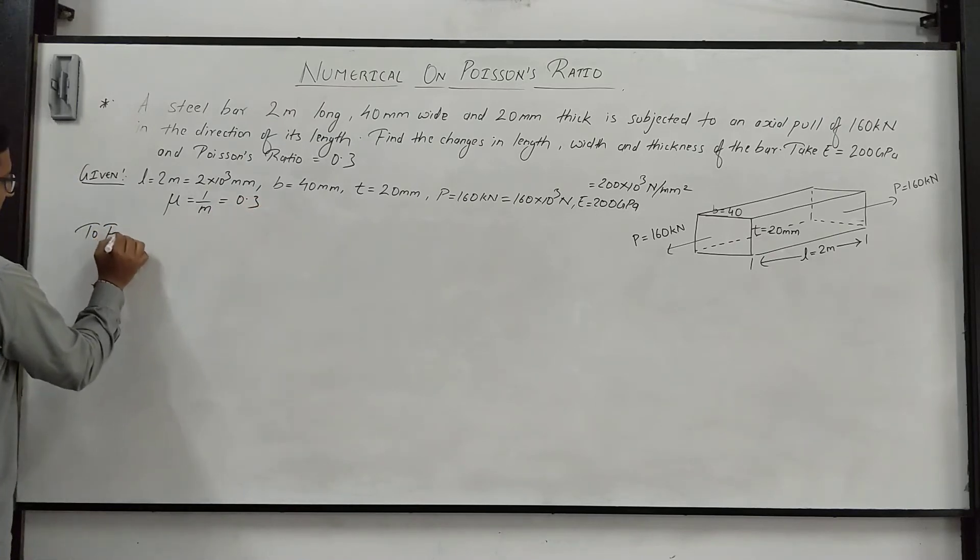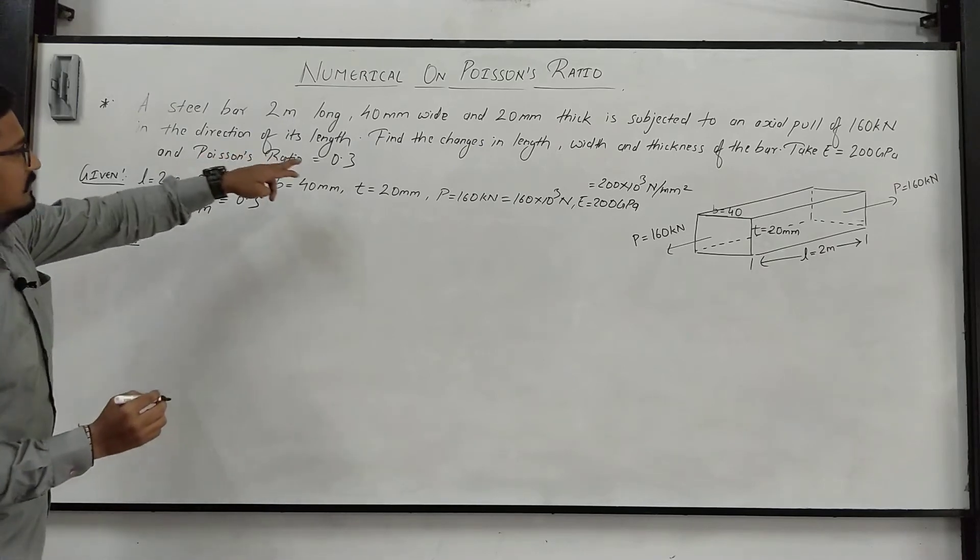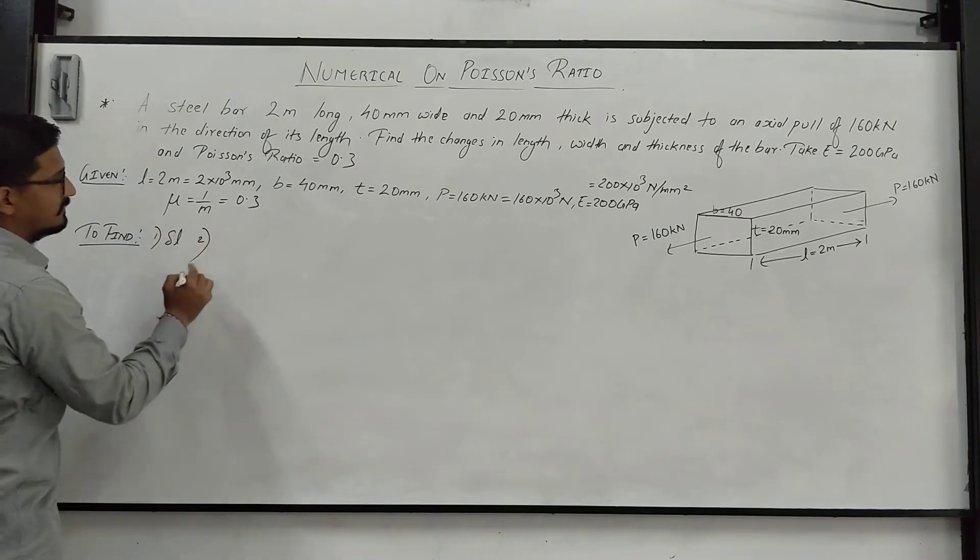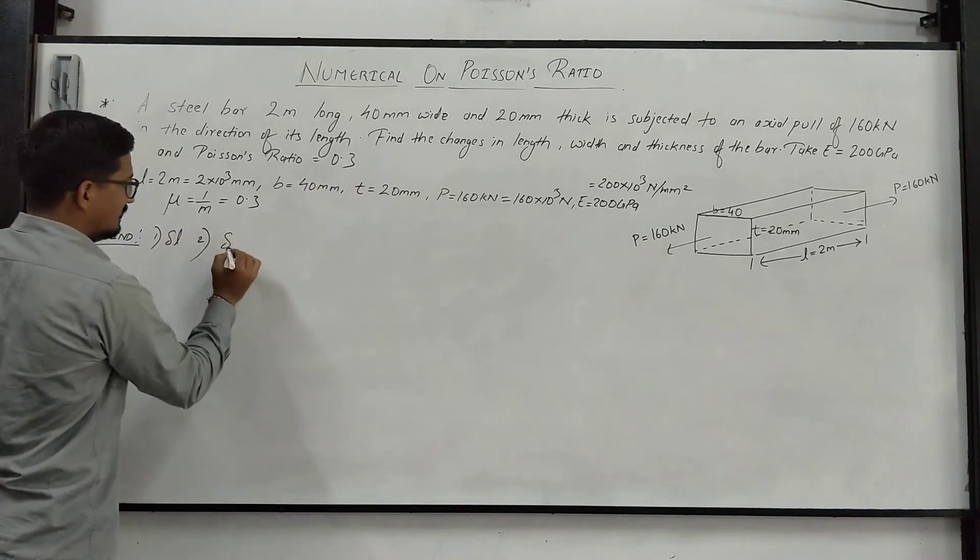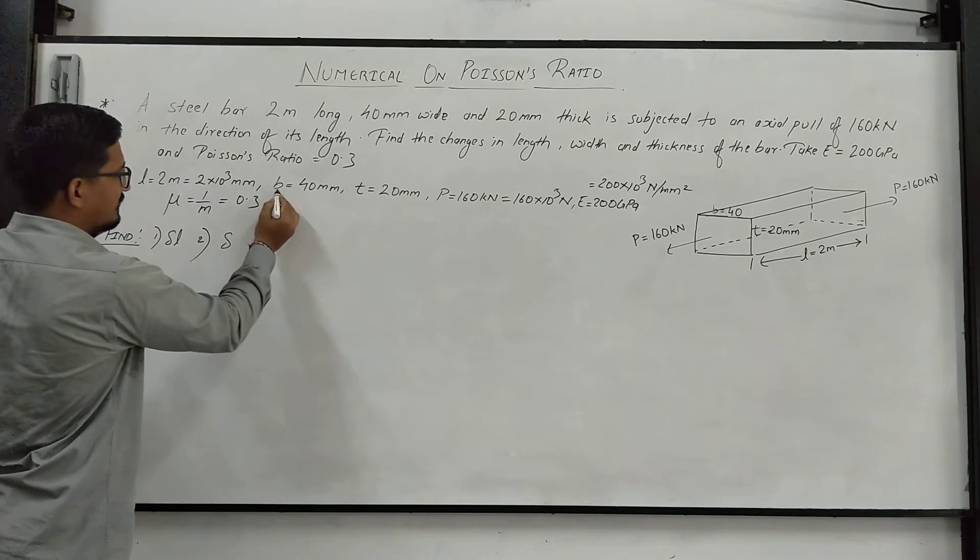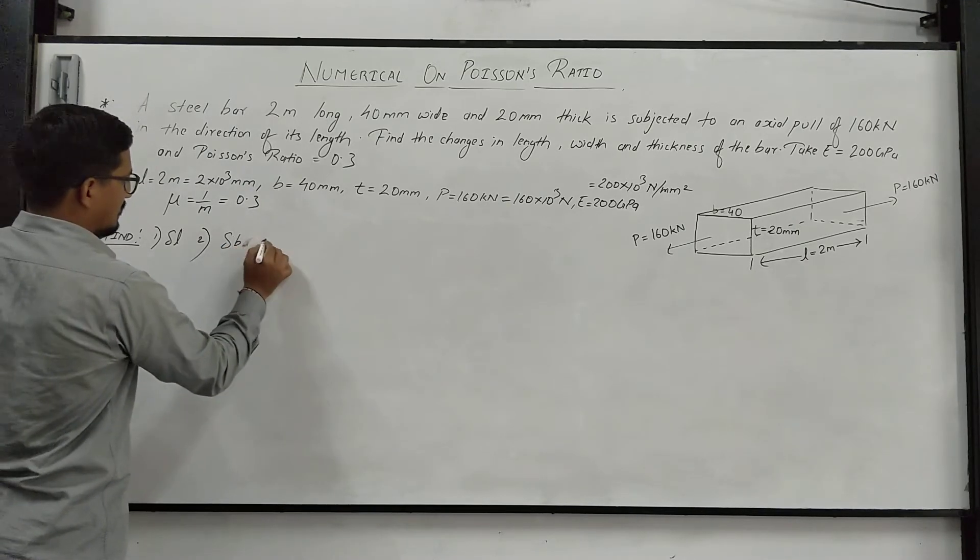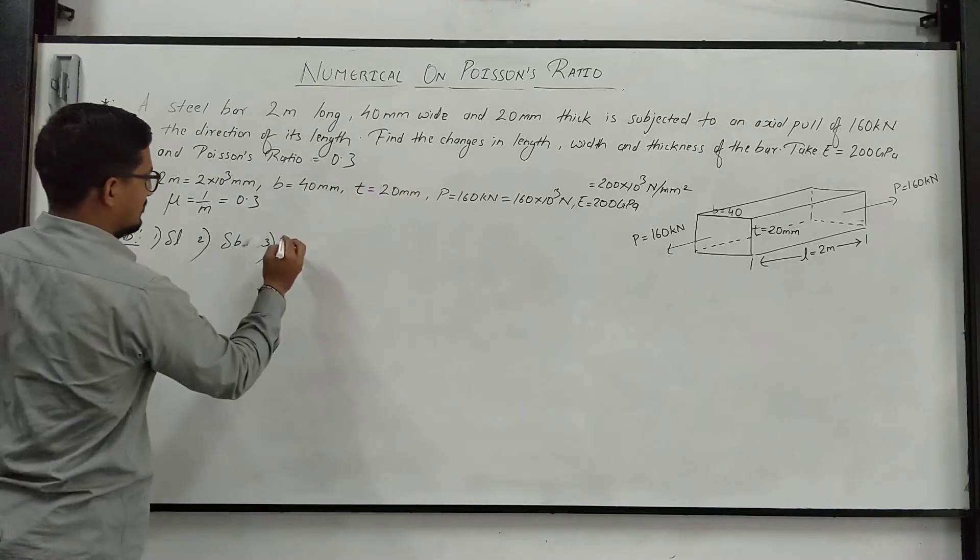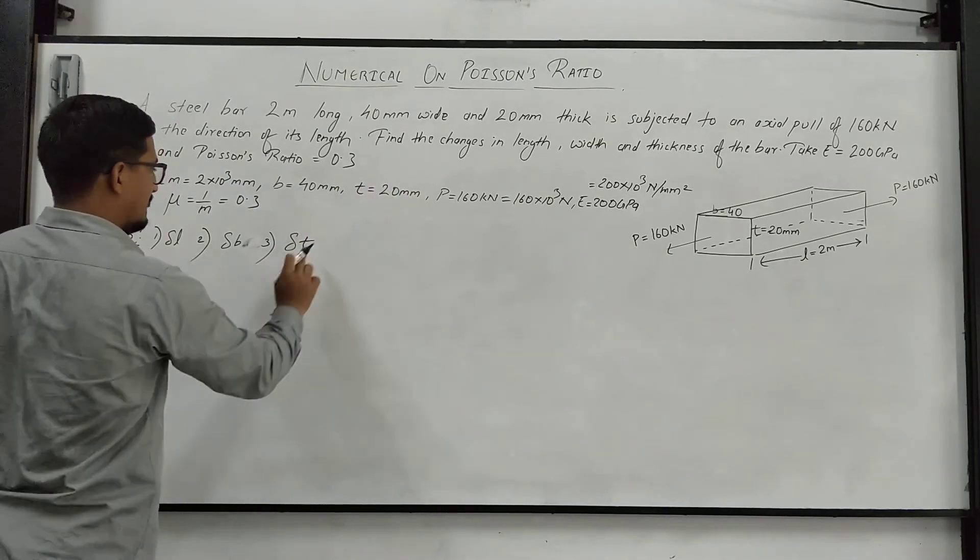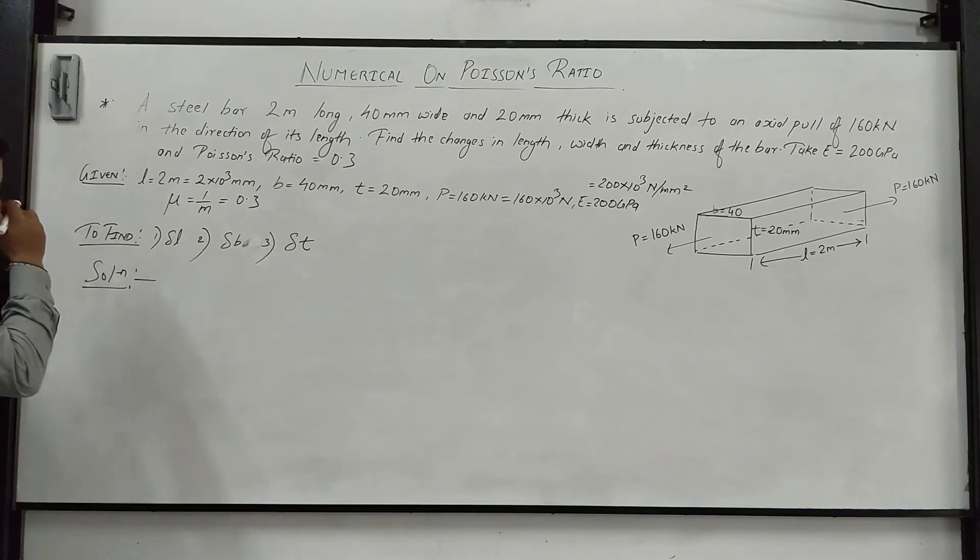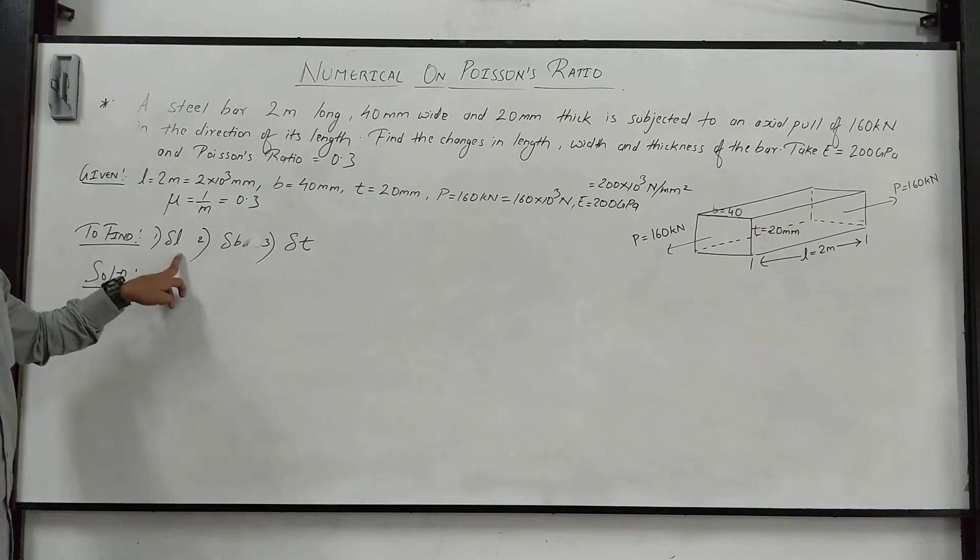What are all the things which we have to find? To find: changes in length, first delta L change in length, change in width delta B, and third change in thickness delta T. So these 3 we have to find. Solution. Let us move into the solution. First, we will go with the change in length.